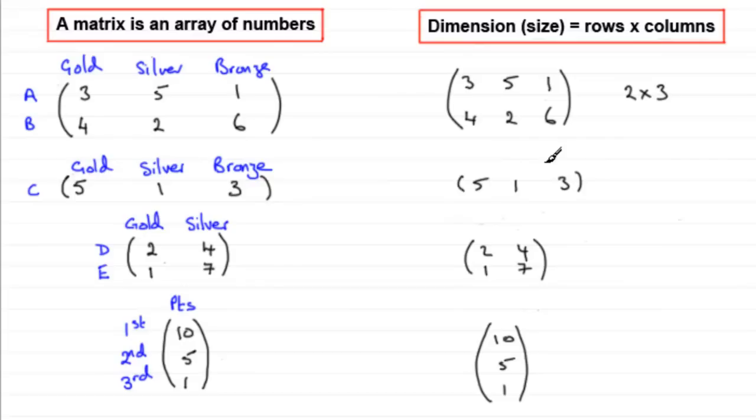This matrix here, we said, was called a row matrix. Just write that in, a row matrix. Whereas this one down here is a column matrix. And the one above it, we call that a square matrix.